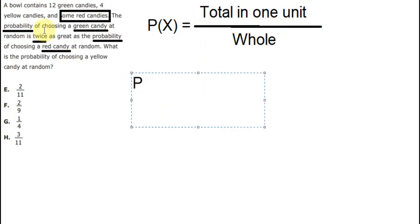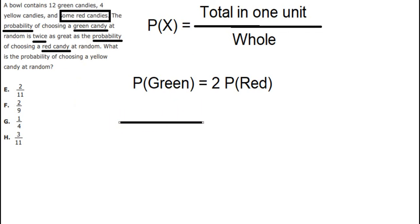Now we have the probability of the green candy. Because the probability of the green candy is twice the probability of the red candy, so we have 2P(red) in here. Now we apply this formula. About the green candy, we have 12 units. About the whole in here, we need to sum everything: 12 plus 4.